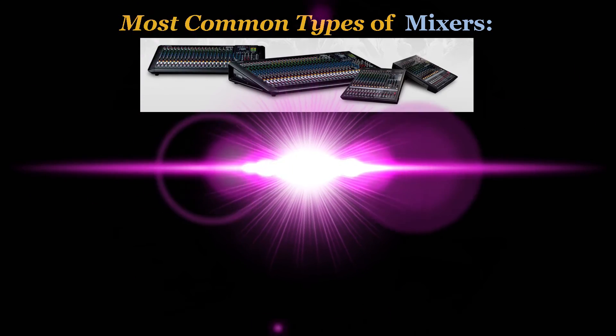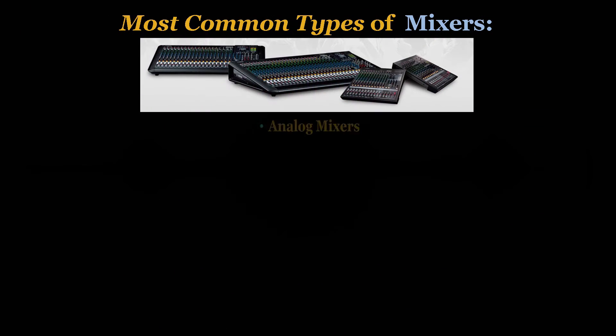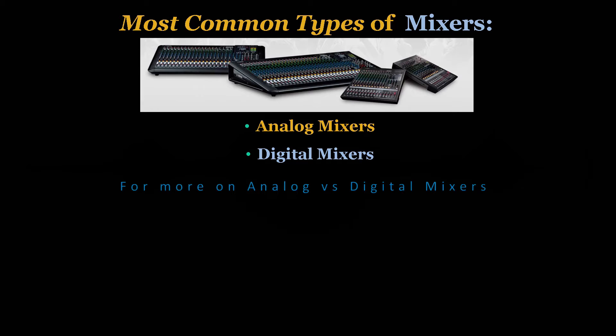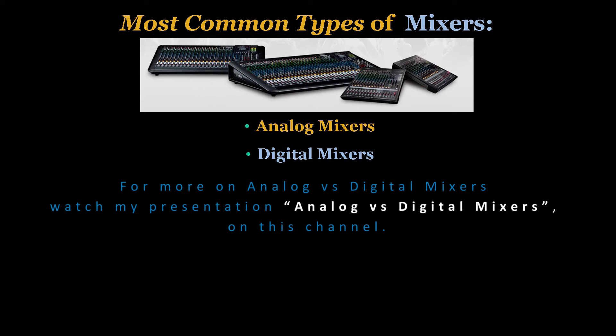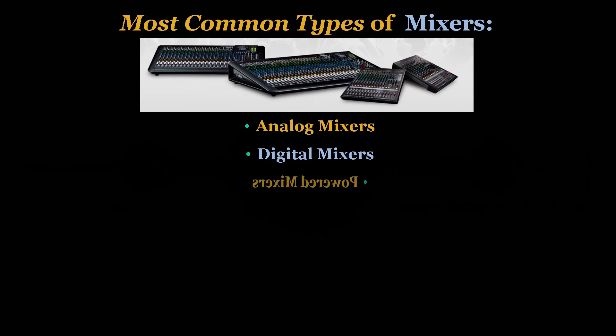Let's check out some of the most common types of audio mixers. The first is analog mixers. These mixers use analog circuitry to process audio signals. They're known for their warm natural sound and are often preferred by the audio purists. Analog mixers can range from small portable models to large multi-channel consoles. Moving on to number two are digital mixers. Digital mixers use digital signal processing, or DSP, to manipulate audio signals. They offer a wide range of features and can be highly flexible and customizable. Digital mixers can also incorporate networking capabilities, allowing them to communicate with other audio equipment and software.